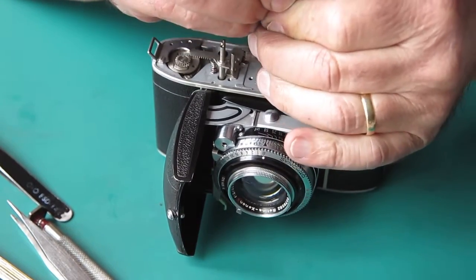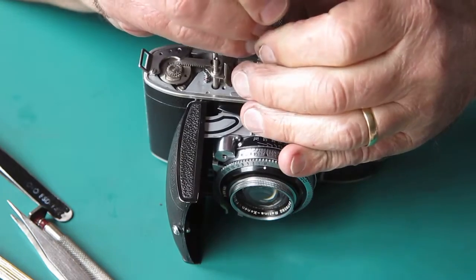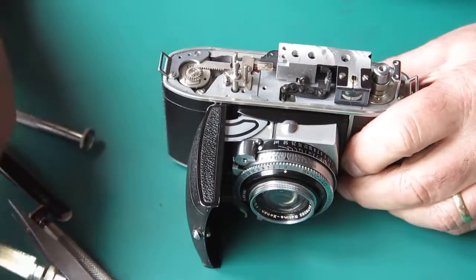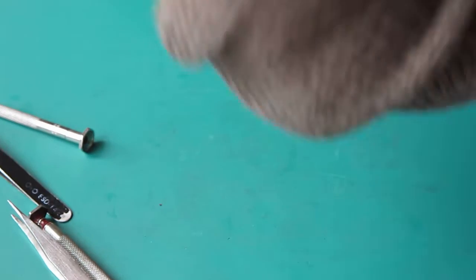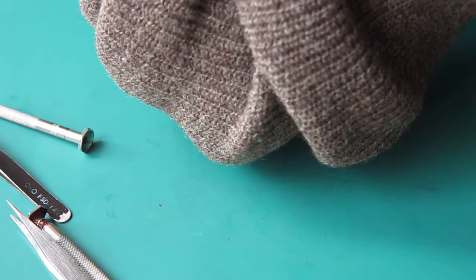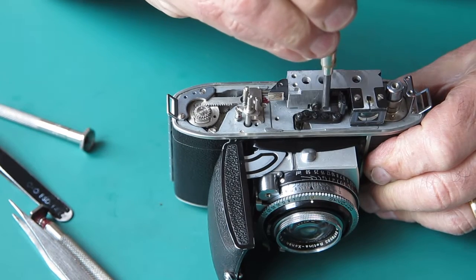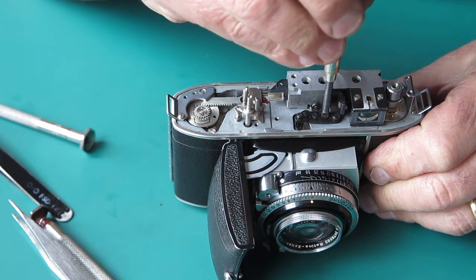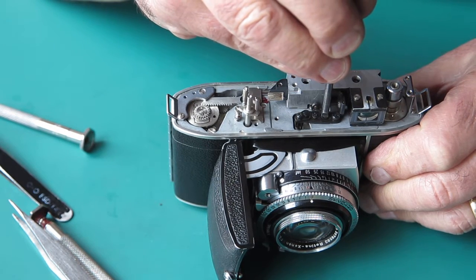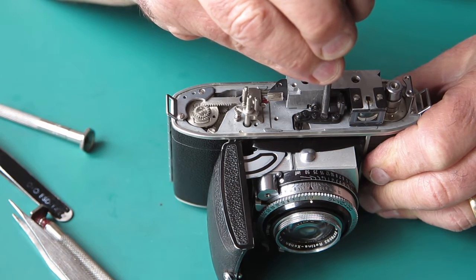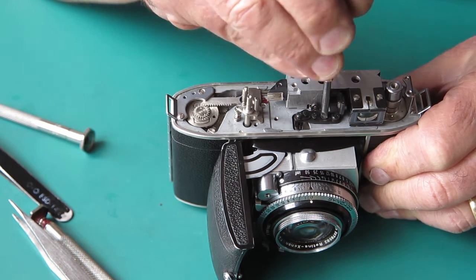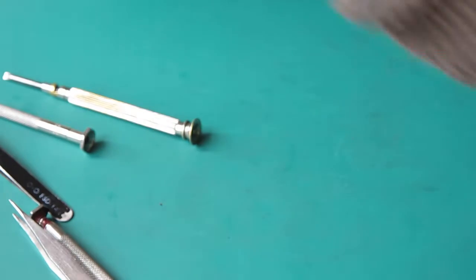I'll just loosen up that lock screw. Work out which way I need to go. I need to move the arm inwards because the images converge at infinity before the focus scale is moved as far as infinity.